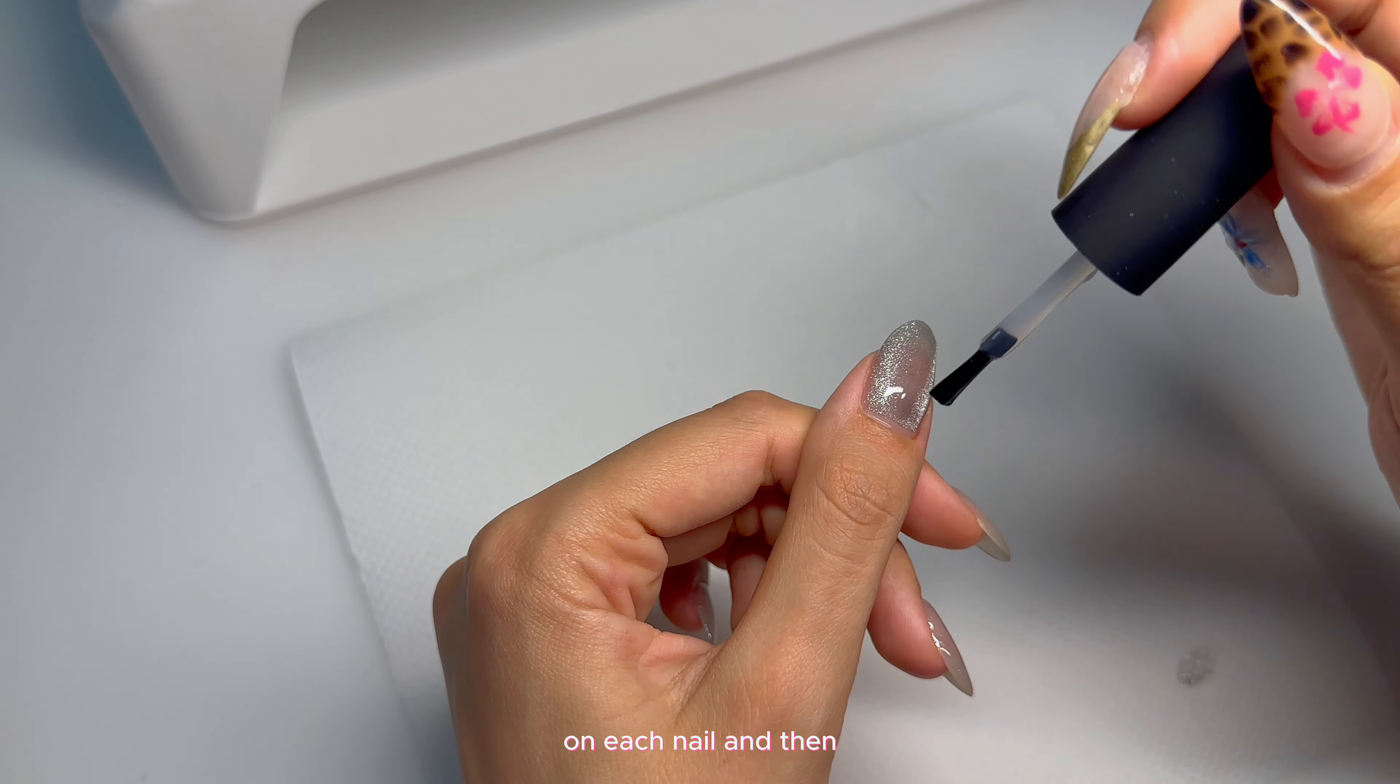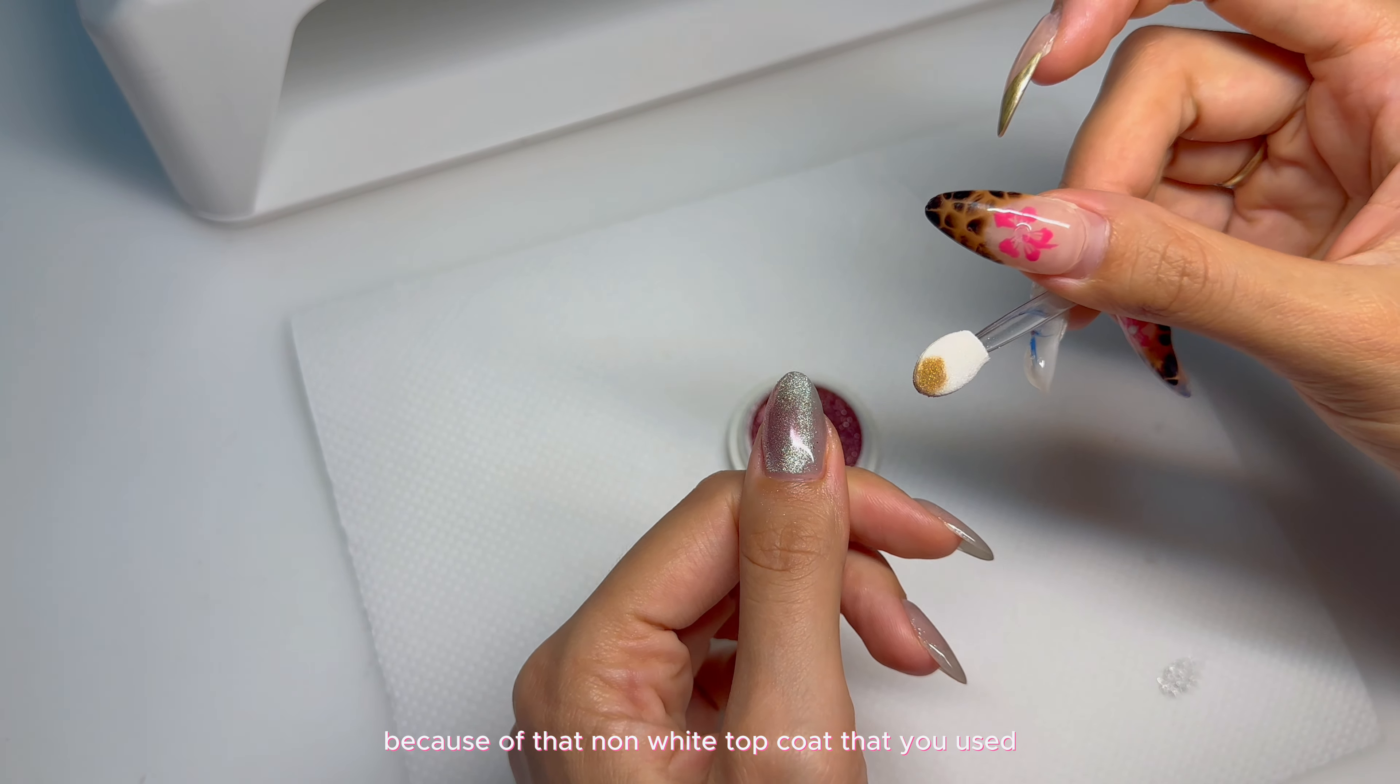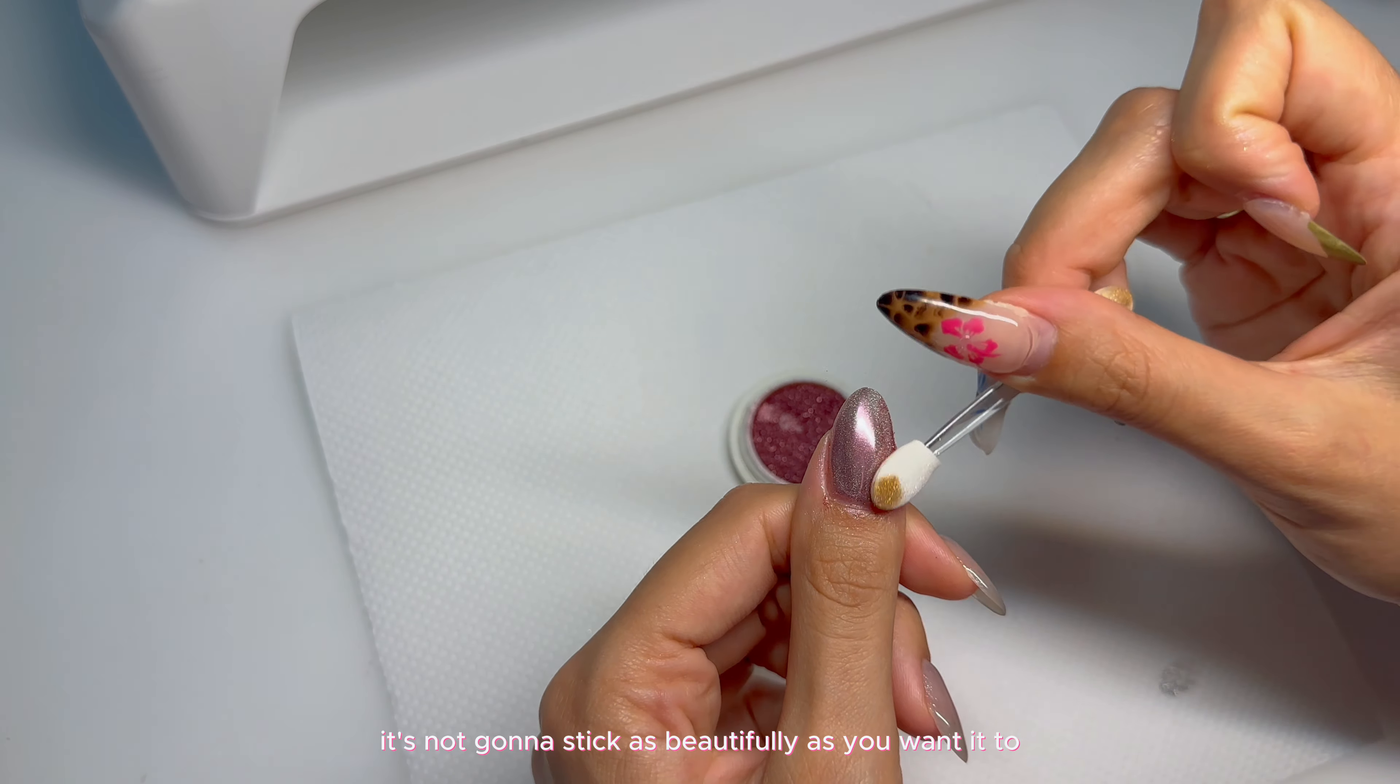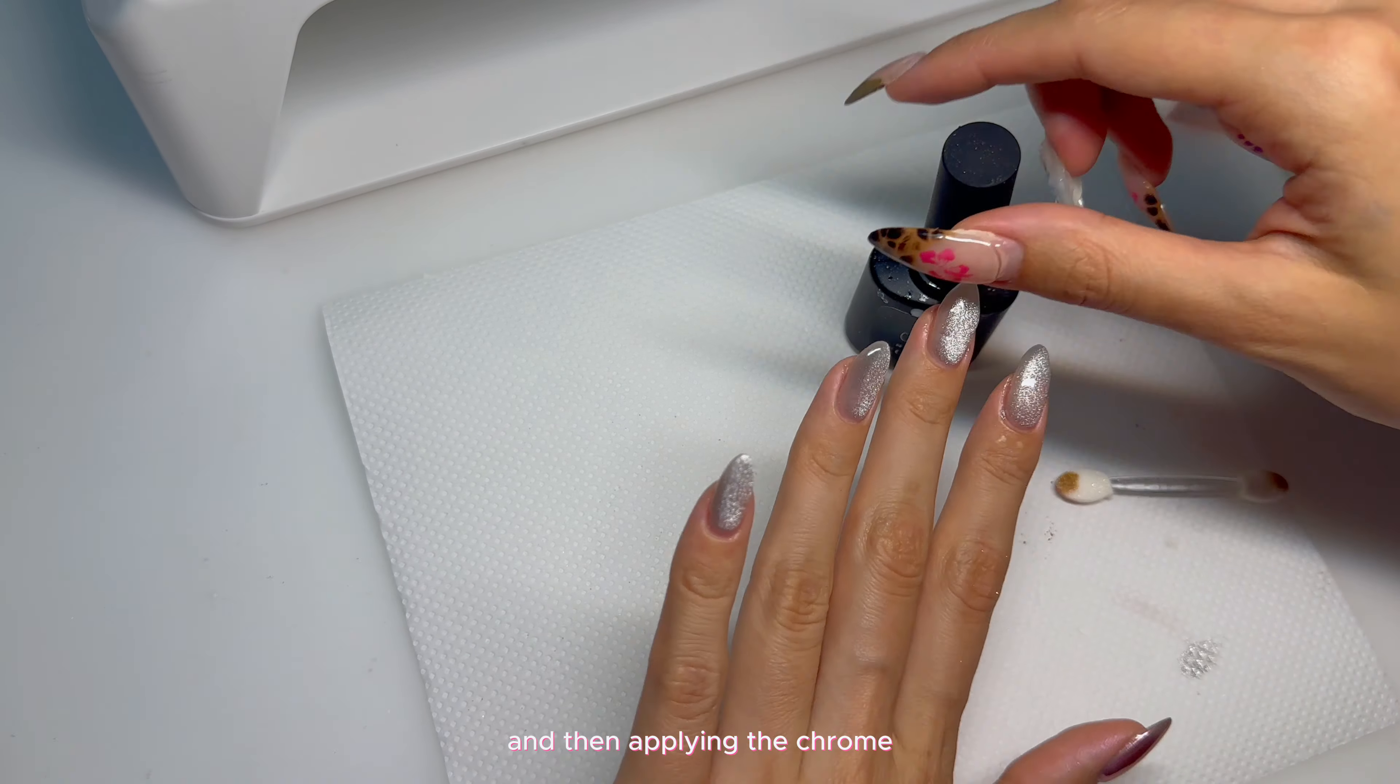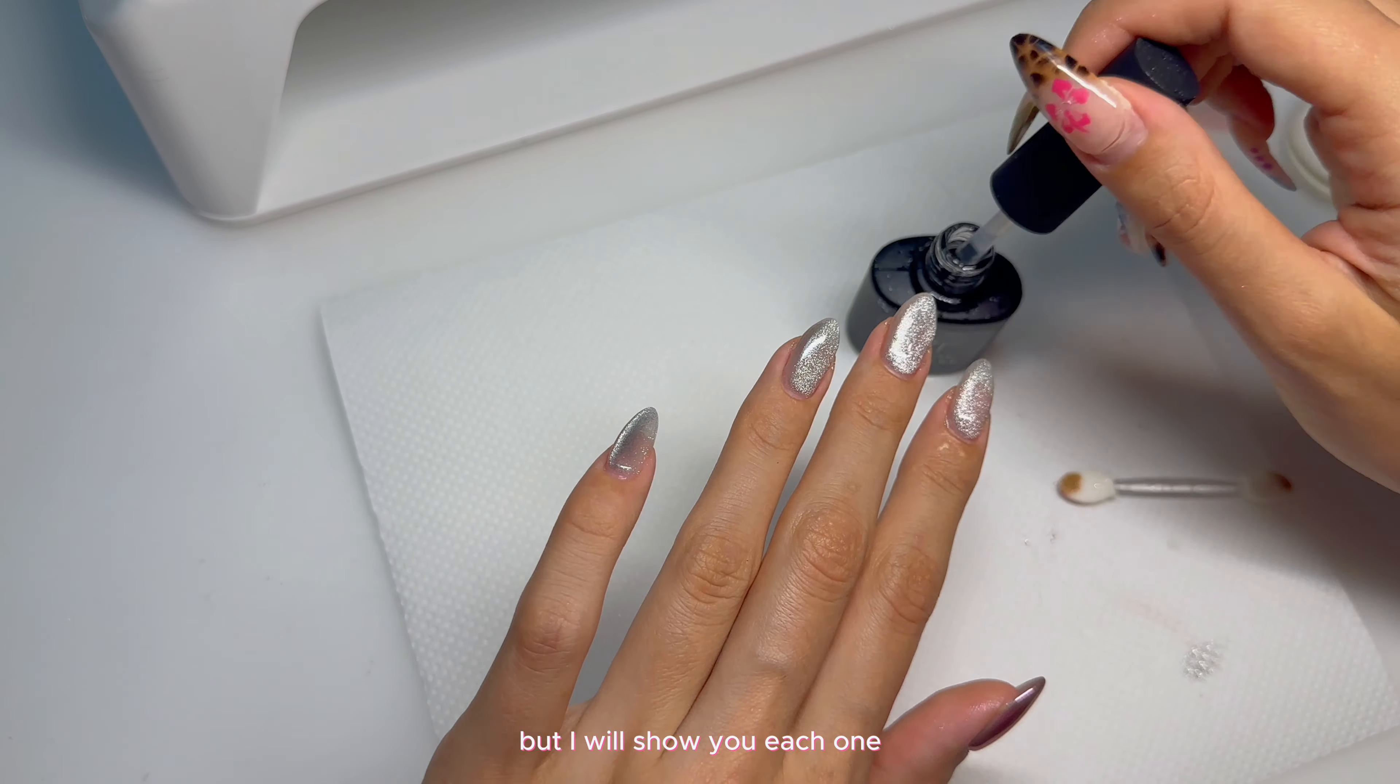After you've applied the magnet gels, you're going to want to apply one layer of non-wipe top coat on each nail. And then the chrome is going to stick perfectly on that nail because of that non-wipe top coat that you used. If you don't use a non-wipe top coat, it's not going to stick as beautifully as you want it to. So each step, I'm curing the non-wipe top coat and then applying the chrome.